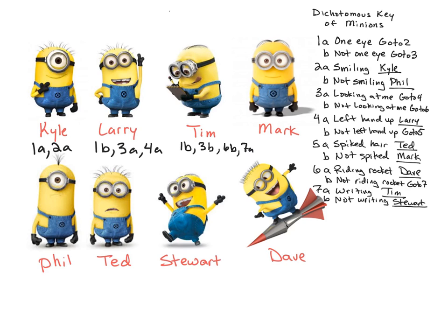Mark has two eyes, so that'll be one B — go to three. He is looking at me, so that'll be three A — go to four. Left hand is not up, so that'll be four B — go to five. Does not have spiked hair, so that will be five B. Now let's go to Phil. Phil has one eye, so that is one A — go to two. He is not smiling, so that is two B. And Phil is keyed out.